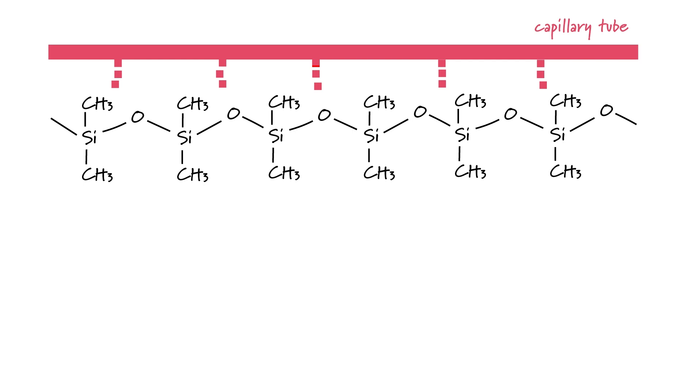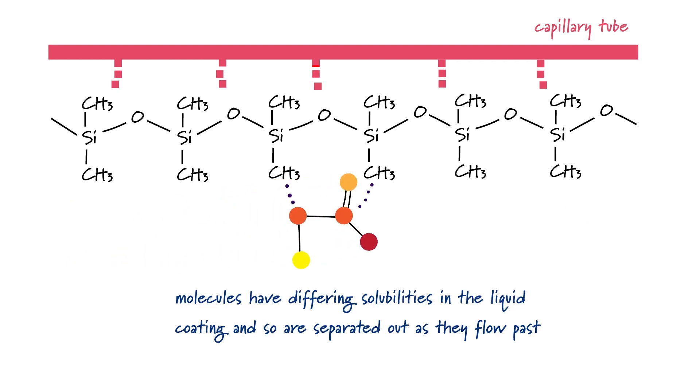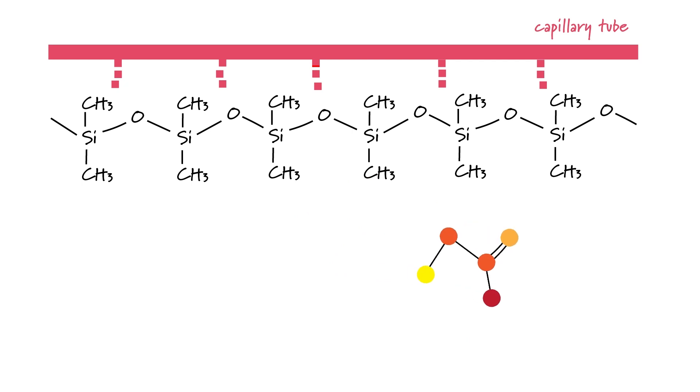Let's look at this in a little more detail. The non-volatile liquid is often a long chain siloxane polymer which is chemically bonded to the silica tube and as the sample flows through the column the different substances in the mixture are separated out because they have different solubilities in this liquid.